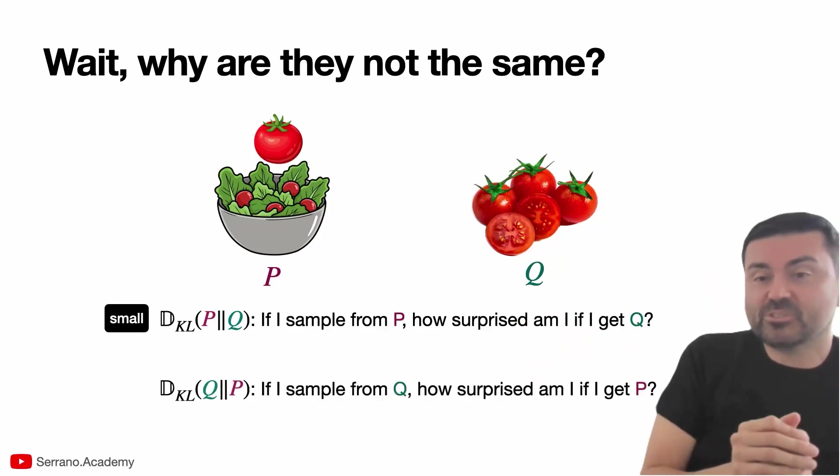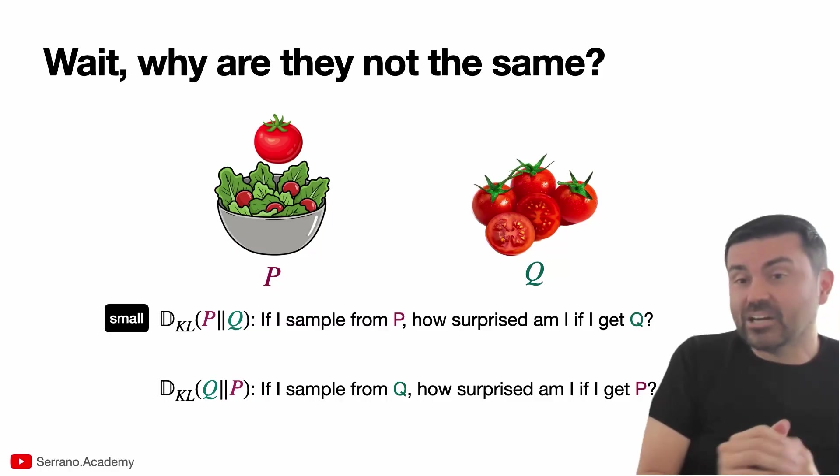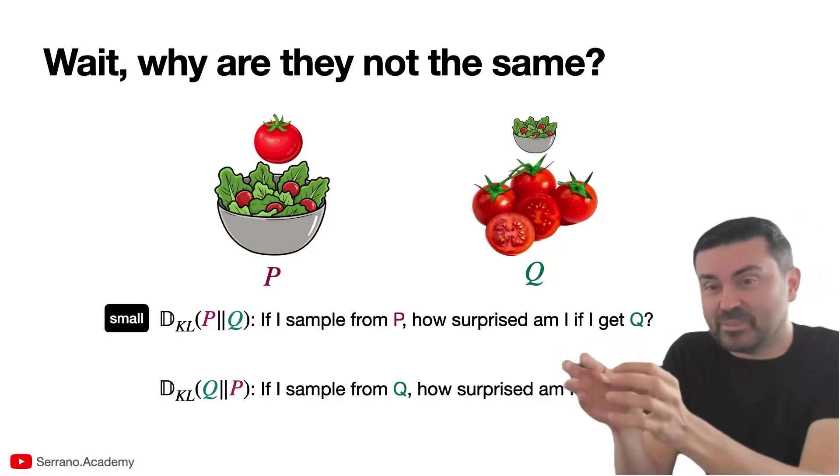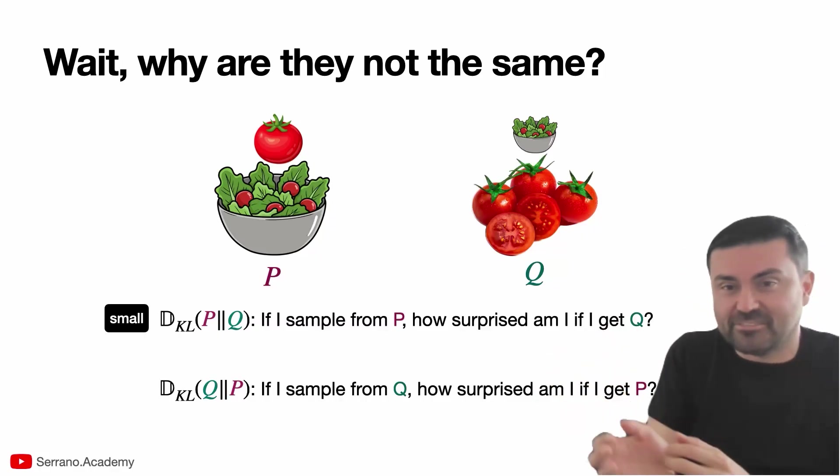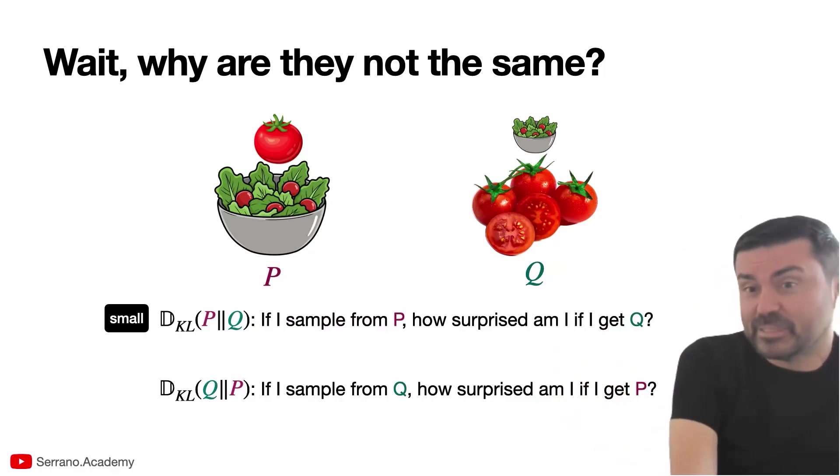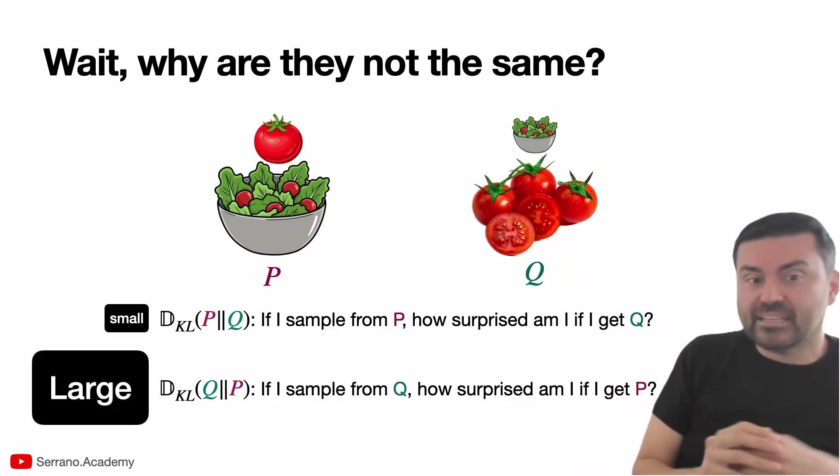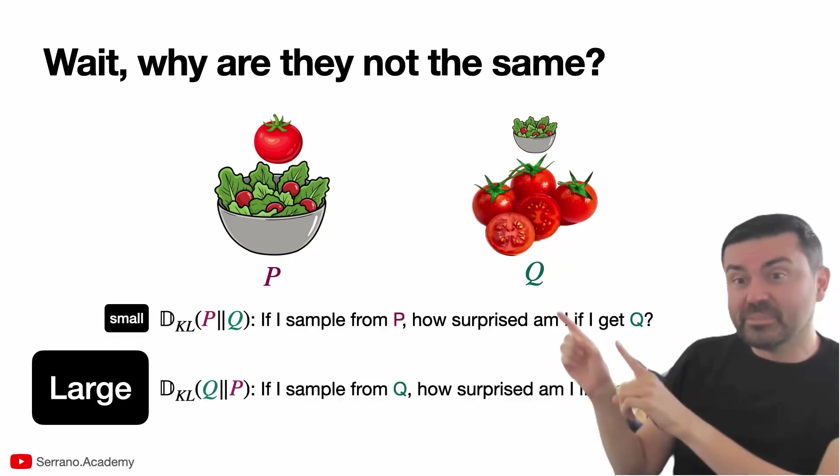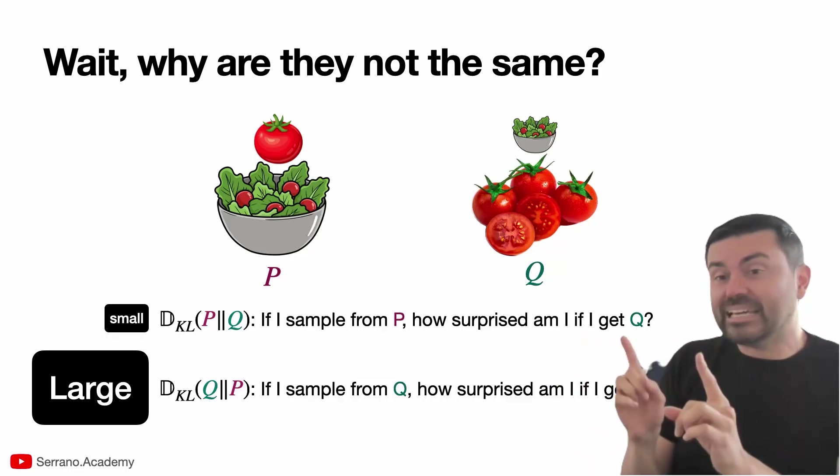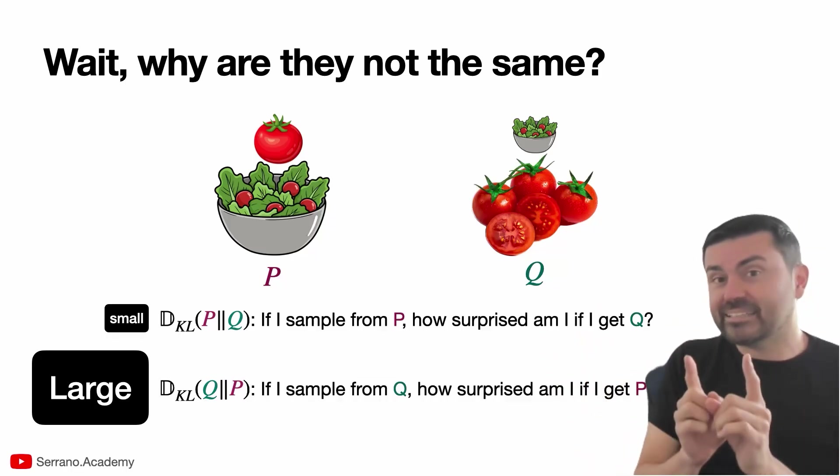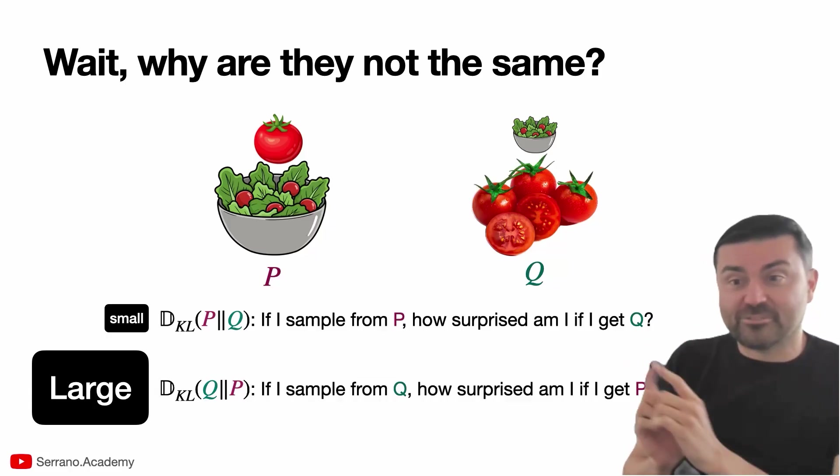On the other hand, what's the KL divergence between Q and P? Well, that says: if I sample out of a bag of tomatoes, how likely am I to obtain a salad with a lot of other stuff, with a little bit of lettuce and a little bit of onions and other stuff? Well, then I'd be really surprised, because that's not going to happen. If I sample out of tomatoes, I get tomatoes. So that is a large surprise, and that is a large KL divergence. So it's not about how similar the salad and the tomatoes are. It's how likely am I to get tomatoes out of a salad versus how likely I am to get salad out of tomatoes. And those are very, very different.